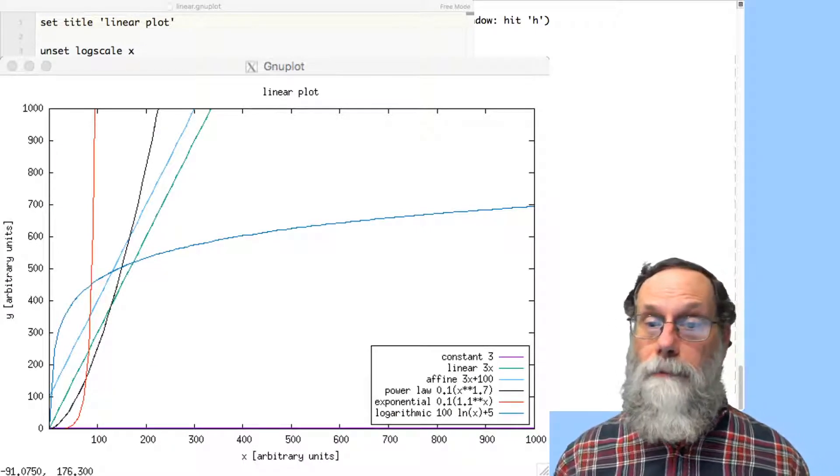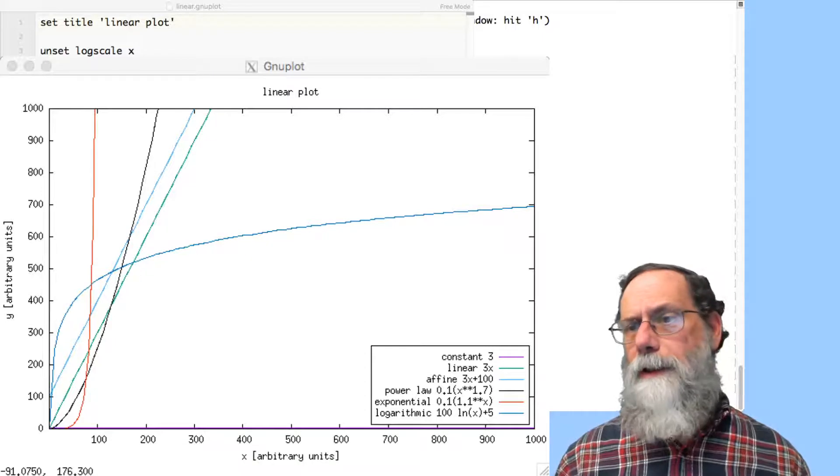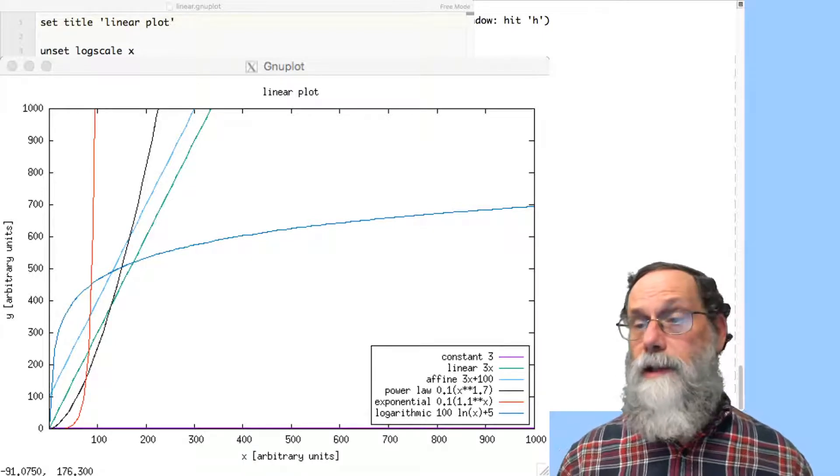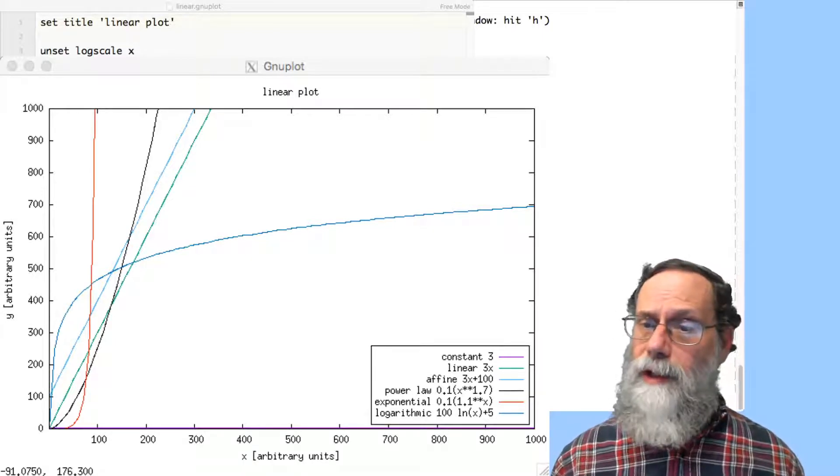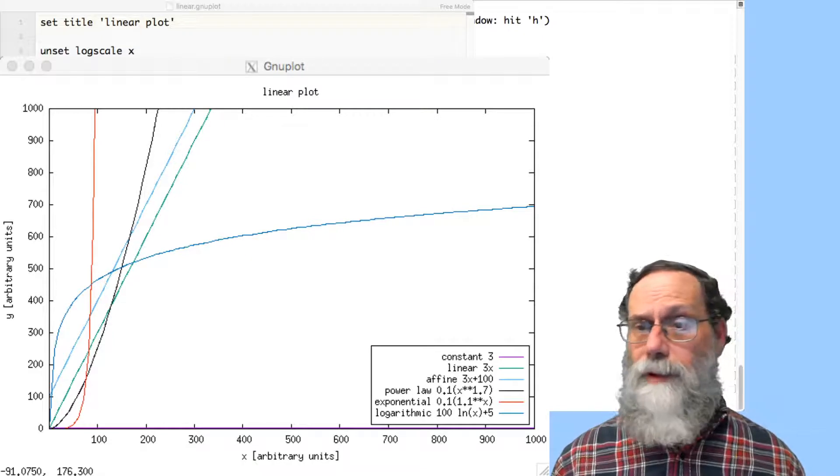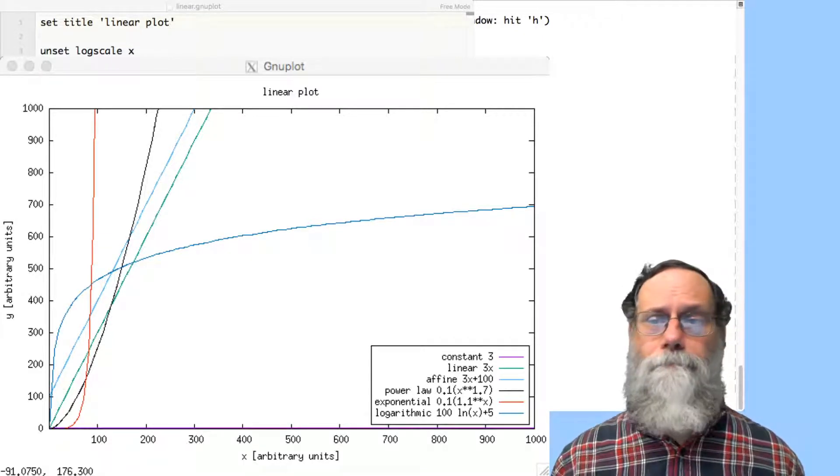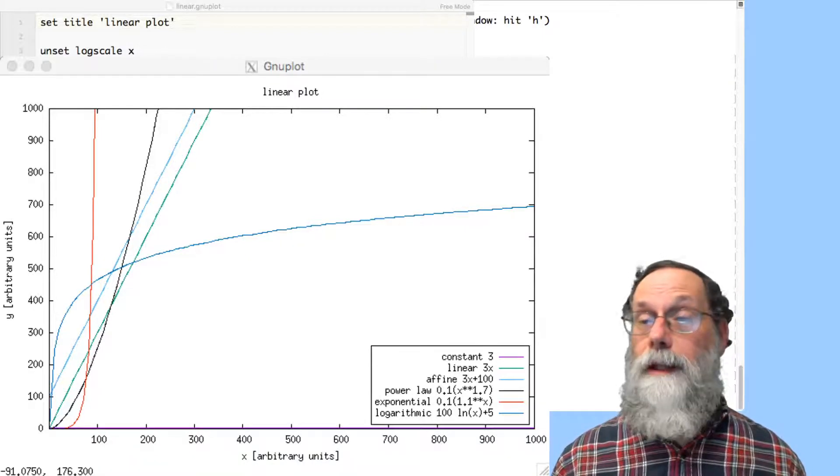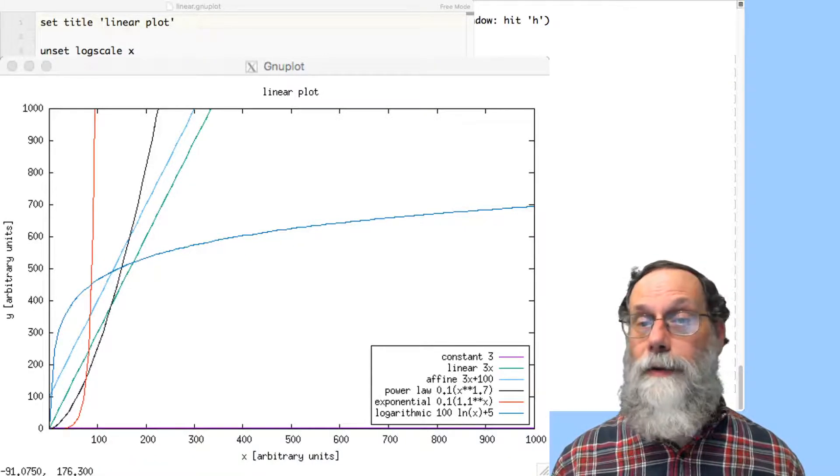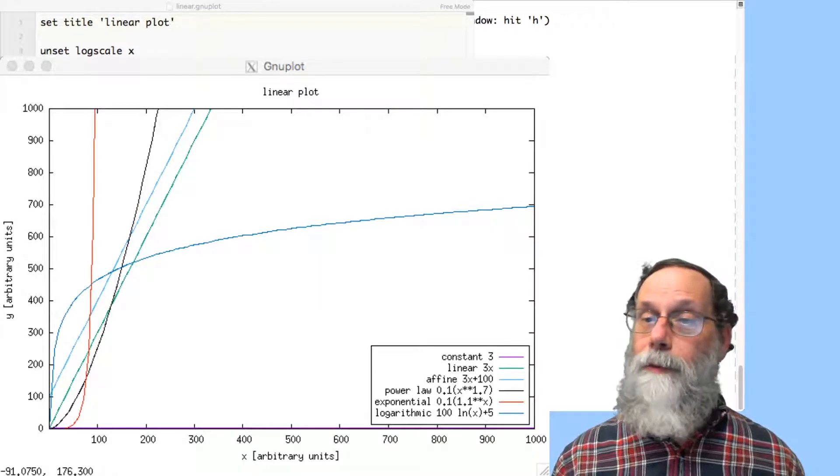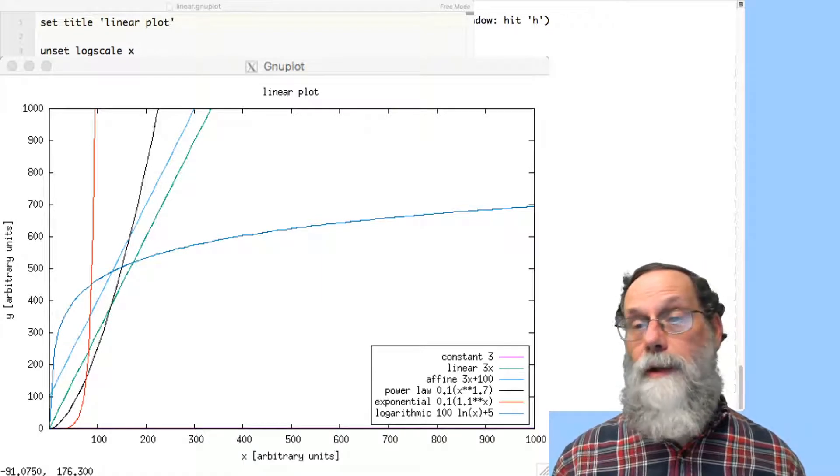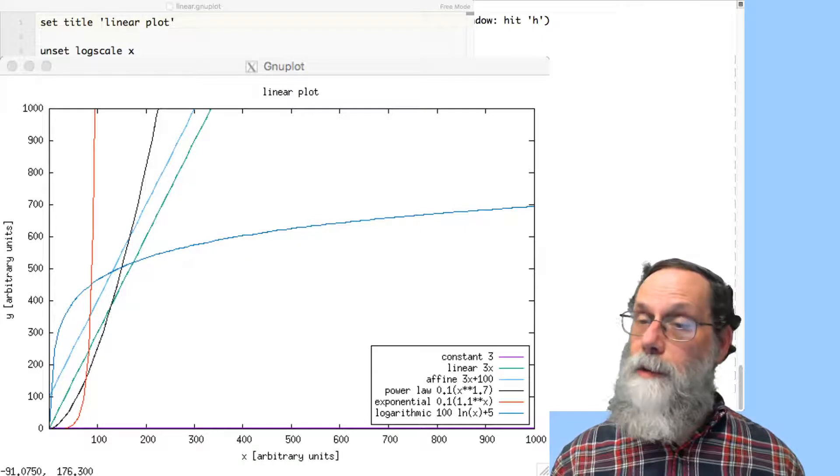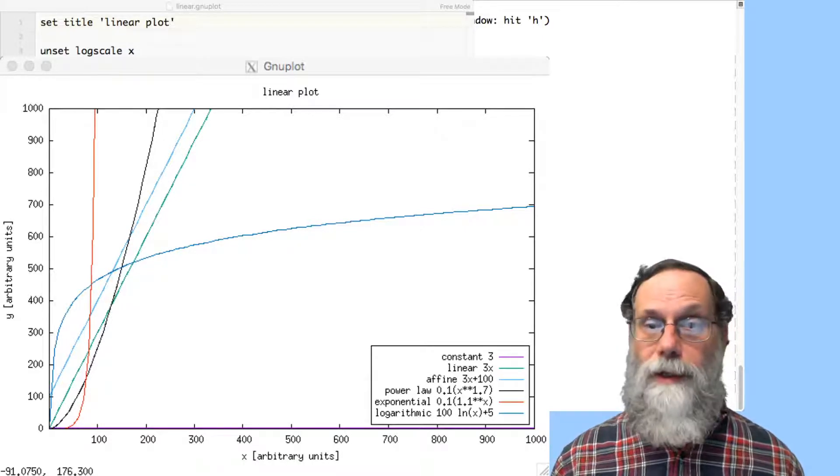So here's the linear plot. There's a purple line there right down near the bottom axis. That's the constant three. It's kind of hard to see because three is not very different from zero or one where that axis is. The other straight lines we have here, the green line, linear line, that's a nice straight line, 3x. And if you move up 100 from that, you get the affine 3x plus 100. So the three things that we expected to be straight lines here are indeed straight lines.